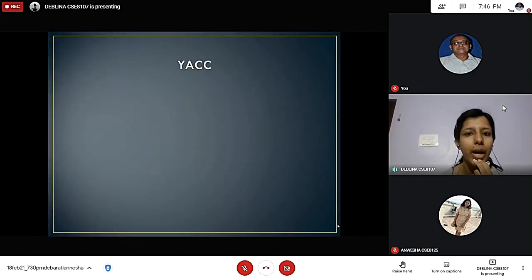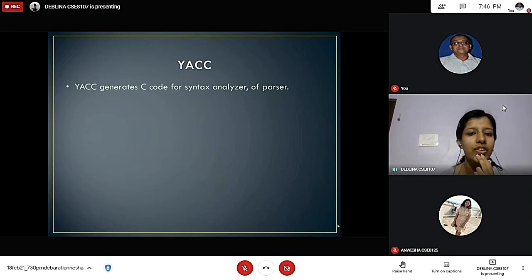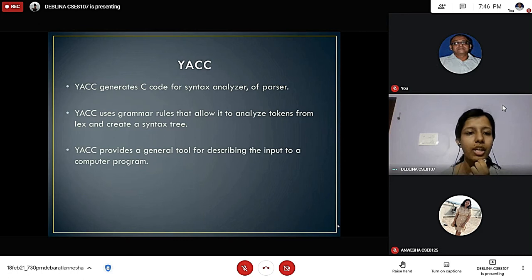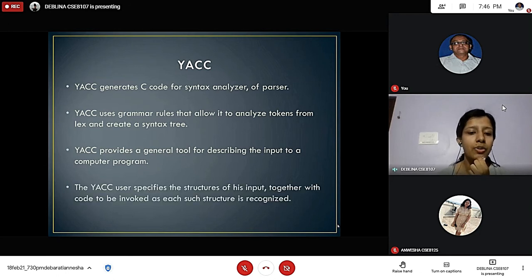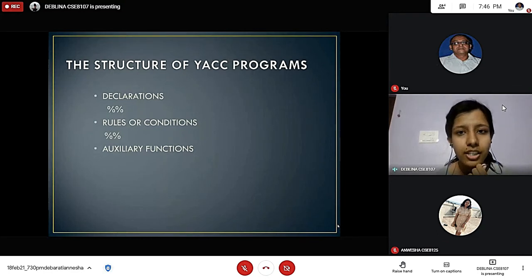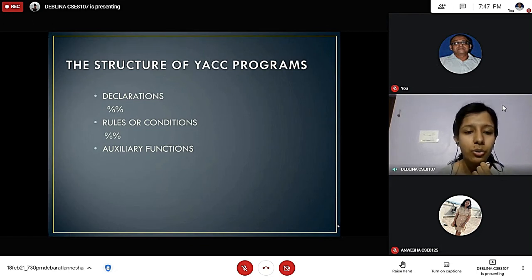Next, we will talk about YAC. YAC generates C for syntax analyzer or parser. YAC uses grammar rules that allow it to analyze tokens from lex and create a syntax tree. It provides a general tool for describing the input to a computer program. The YAC user specifies the structure of his input together with code to be invoked as each structure is recognized. The structure of YAC programs consists of declarations, then rules or conditions, and then the functions or auxiliary functions.